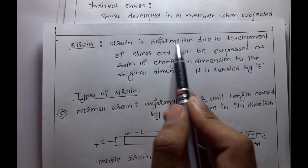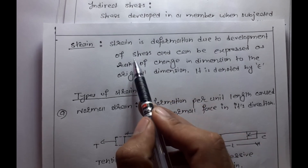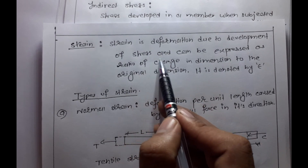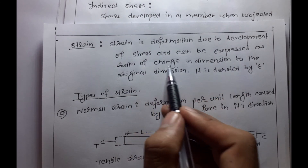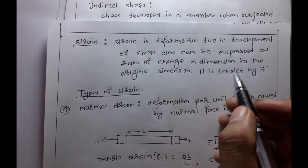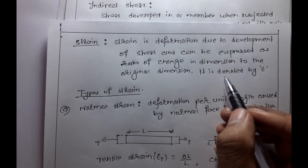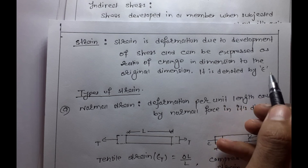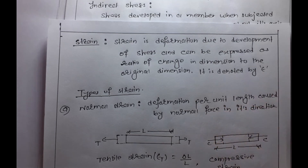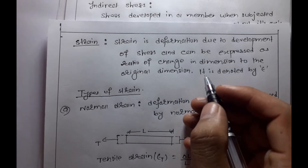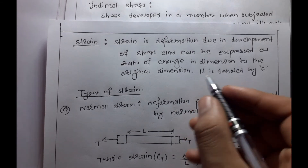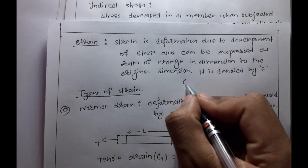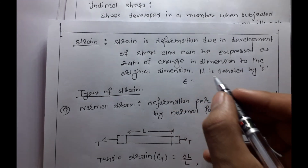Strain is the deformation due to the development of stress and can be expressed as the ratio of the change in dimension to the original dimension. It is denoted by epsilon.